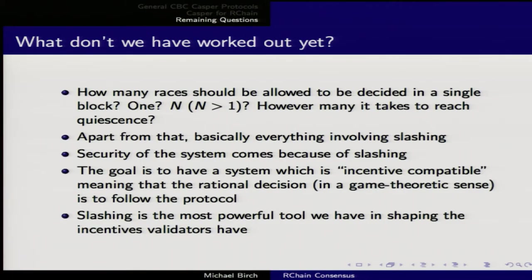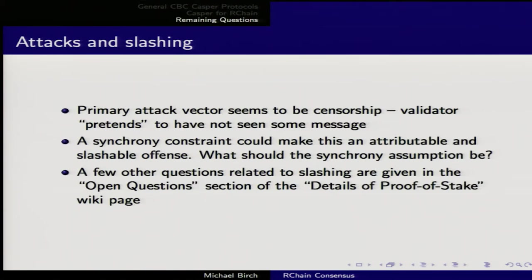Basically everything involves slashing. Security in the system comes entirely from slashing — from what you can detect about someone else's behavior. You can't slash them on computing speed or network speed unless they're not fast enough to meet the service level agreement. The goal is a system that is incentive-compatible, meaning the rational decision is to follow the protocol. Slashing is basically the only tool for shaping incentives. The primary attack vector seems to be censorship: you can pretend not to have received a message until you see some other message that influences your decision.